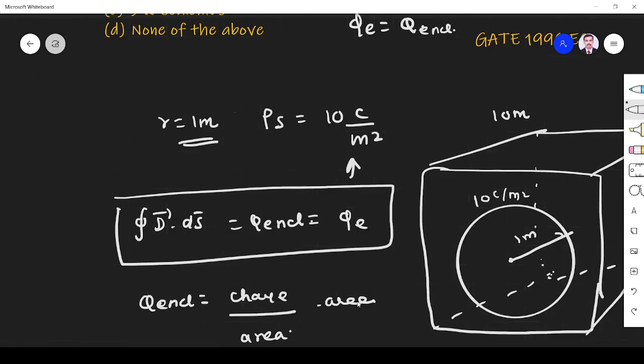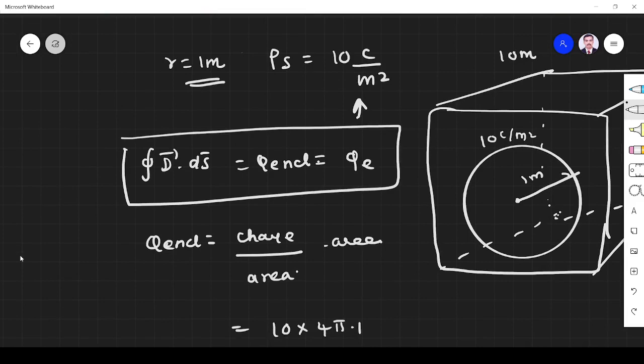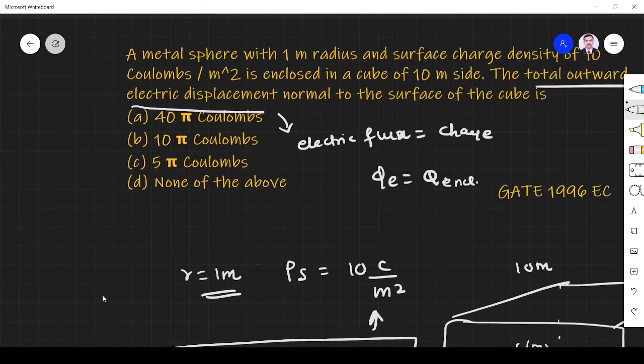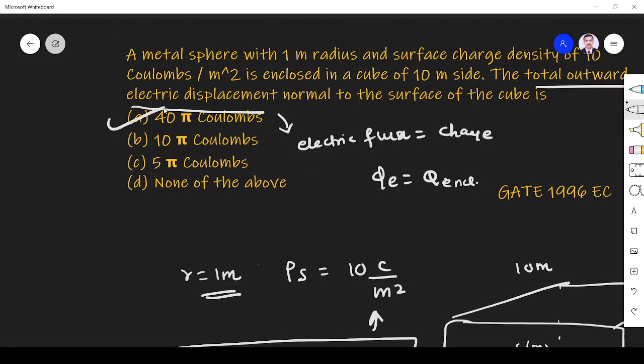Q enclosed equals charge per area times area. You don't need to use integration - using a simple shortcut method, we can find the answer is 40π coulombs. So the answer is 40π coulombs, and option A is the right answer. Thank you.